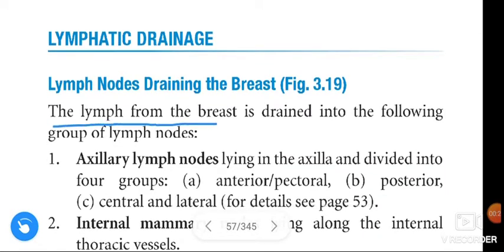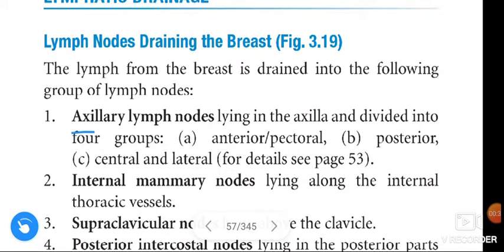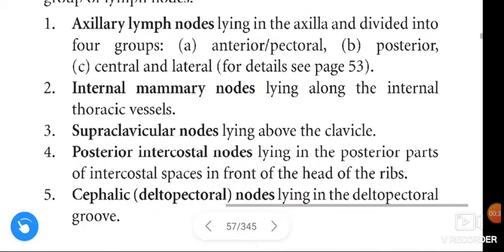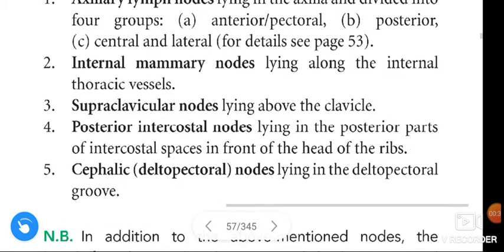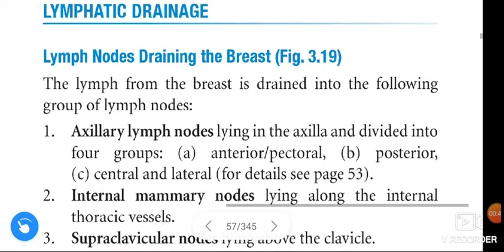The lymph from the breast is drained into the following groups of lymph nodes: axillary lymph nodes, internal mammary nodes, supraclavicular nodes, posterior intercostal nodes, and cephalic nodes — also called deltopectoral nodes.